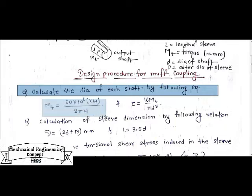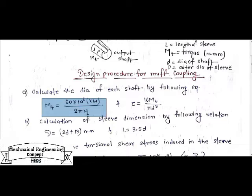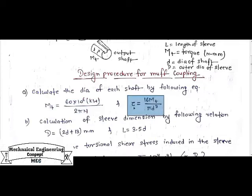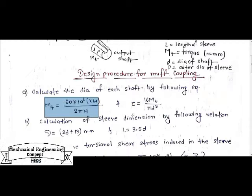The torque MT is equal to 60 × 10⁶ × kilowatt divided by 2πN/60. This is the basic relation to calculate torque. With the help of power and speed we can calculate torque, and with the help of torque we can calculate the diameter of the shaft with respect to stresses. Tau is derived from the torsional equation T/J = τ/R = Gθ/L. From T/J = τ/R, we can achieve τ = 16MT / (πD³).